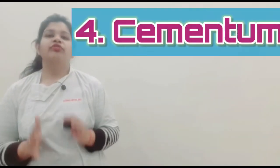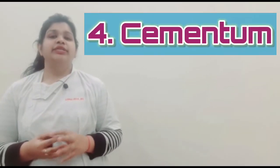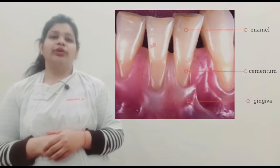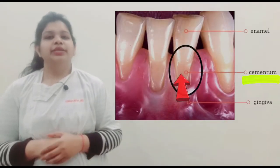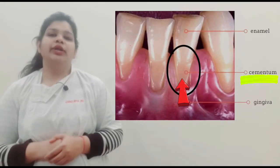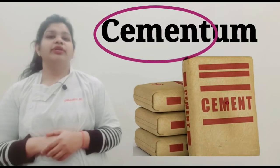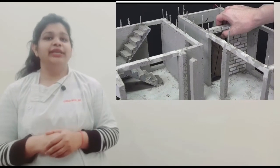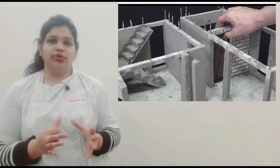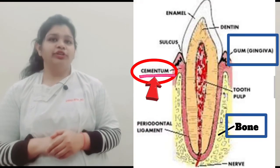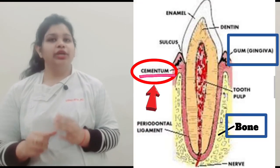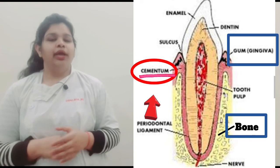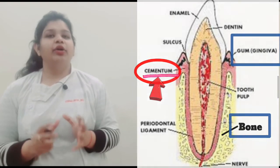The fourth layer is cementum. Just as the crown portion's outer layer is enamel, similarly the root portion's outer layer is cementum. The word cementum is taken from the word cement. As cement is the foundation of a house that keeps it grounded and secure, similarly cementum binds the root of a tooth to the gums and jawbone and acts as an anchor of the tooth.